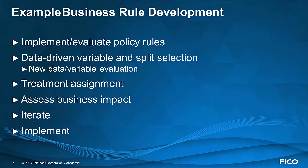If you have new data sources available or new variables, you can use decision trees to evaluate them in addition to what you're already using. Once the segmentation is done, you can assign treatment and then assess the business impact of that treatment. It's usually an iterative process with several iterations before you're ready for implementation.